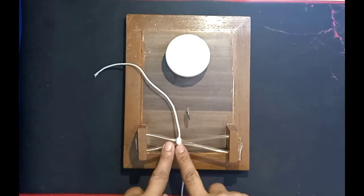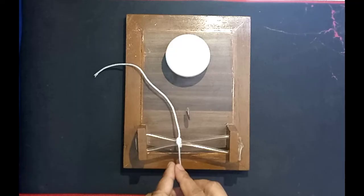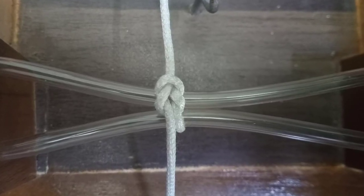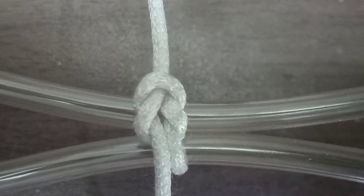Now you can see this is the reef knot. The shape is exactly the same as we made by two-handed method. The shape does not vary, only the method is different. This is the square knot or the reef knot that we made by one-handed method. Thank you.